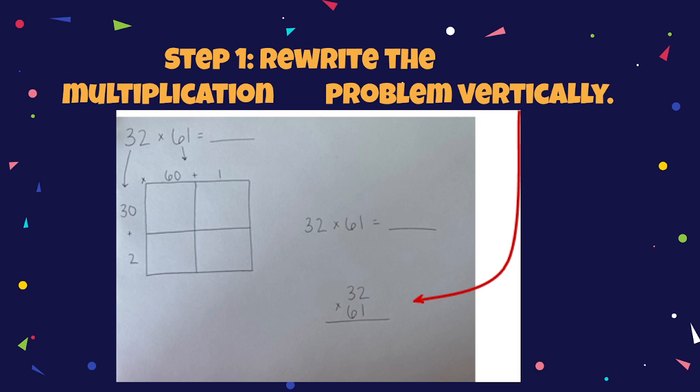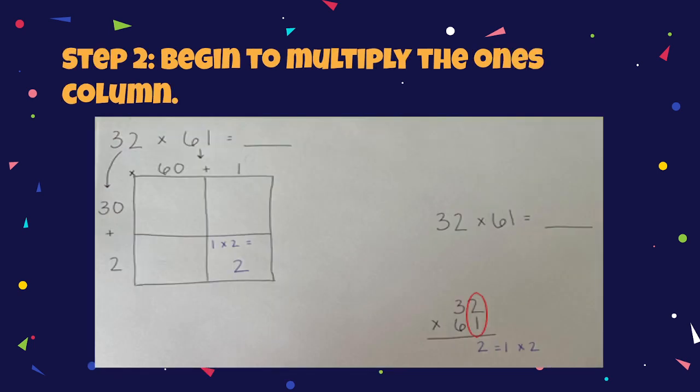Step number one, rewrite the multiplication problem vertically. As I said, vertically is the best way to go. Step two, begin to multiply the ones columns. As you can see, I have circled the ones columns to demonstrate that. So you will multiply 1 times 2, which will give you 2.